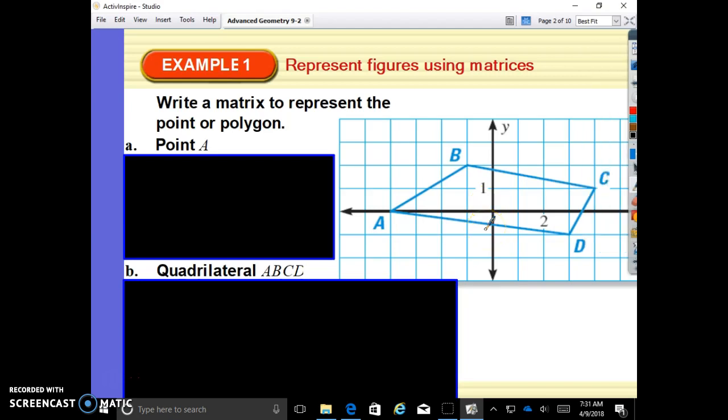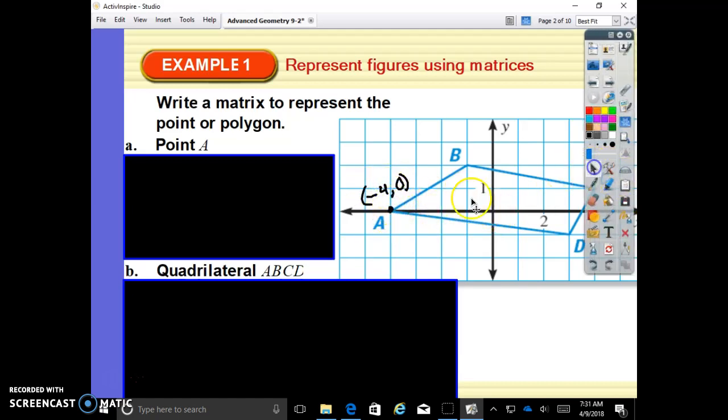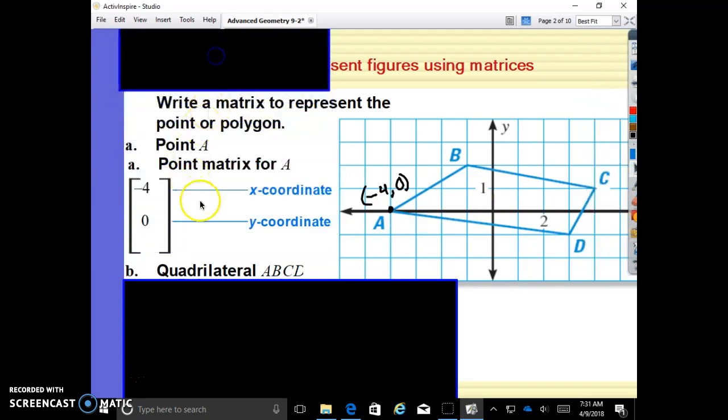Write a matrix to represent the point or polygon. We're going to write a matrix to represent point A. A matrix is just a fancy way of writing the coordinates. A is at negative 4, 0. You get into the elevator before you can go up or down, so you're going over to negative 4, up and down nothing. The fancy way of writing this is a matrix. Your matrix is always your x and then your y, written vertically. So point negative 4, 0 is written like this inside brackets.